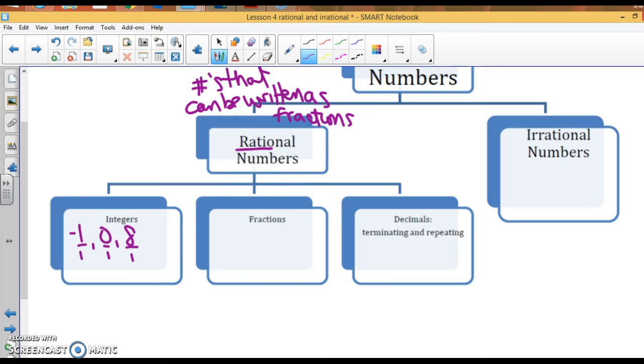In rational numbers, we also have fractions: negative two thirds, seven and one fourth. Those are rational because obviously they can be written as fractions. Now, two types of decimals are rational: terminating decimals like 0.5, which we know is one half, that can be written as a decimal or as a fraction. And repeating decimals, 0.3 with a bar over it, that's one third. Terminating and repeating decimals are both rational because they can be written as fractions.